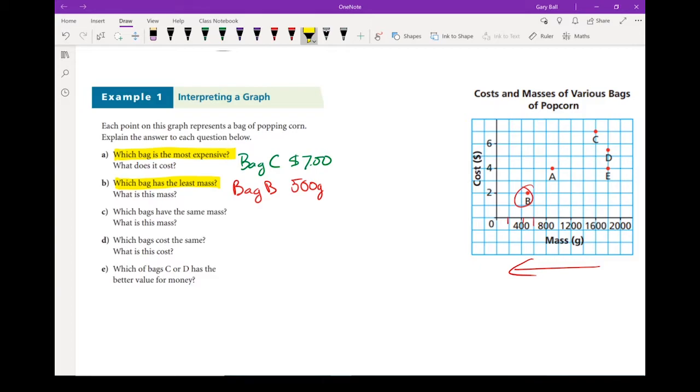The question: Which bags have the same mass? We're still talking about the mass axis, looking for two bags that have roughly the same mass. These two right here. They're both at the same mass on that graph. We are looking at Bag D and Bag E. That's got a mass of about 1800 grams.